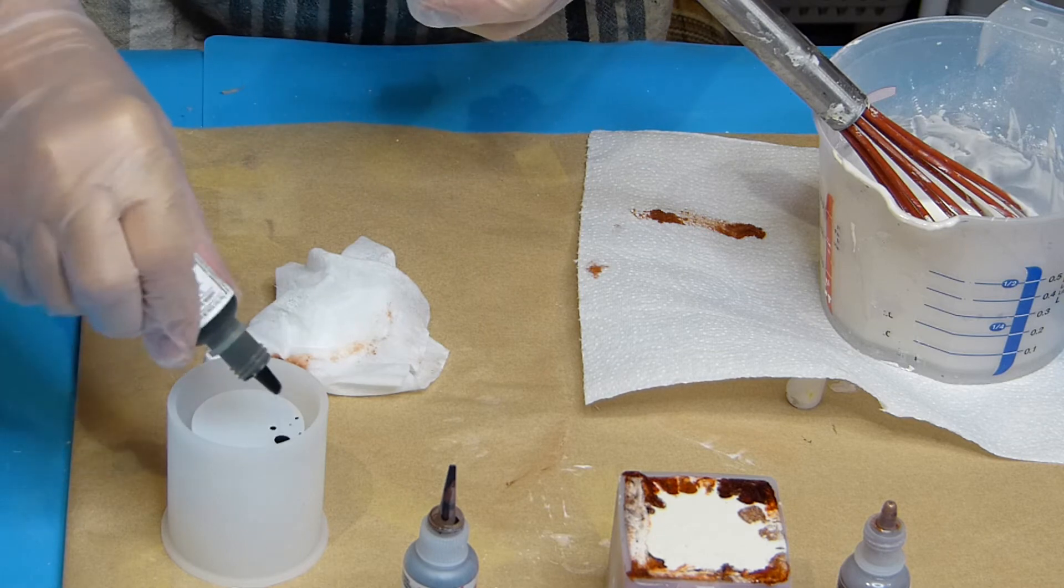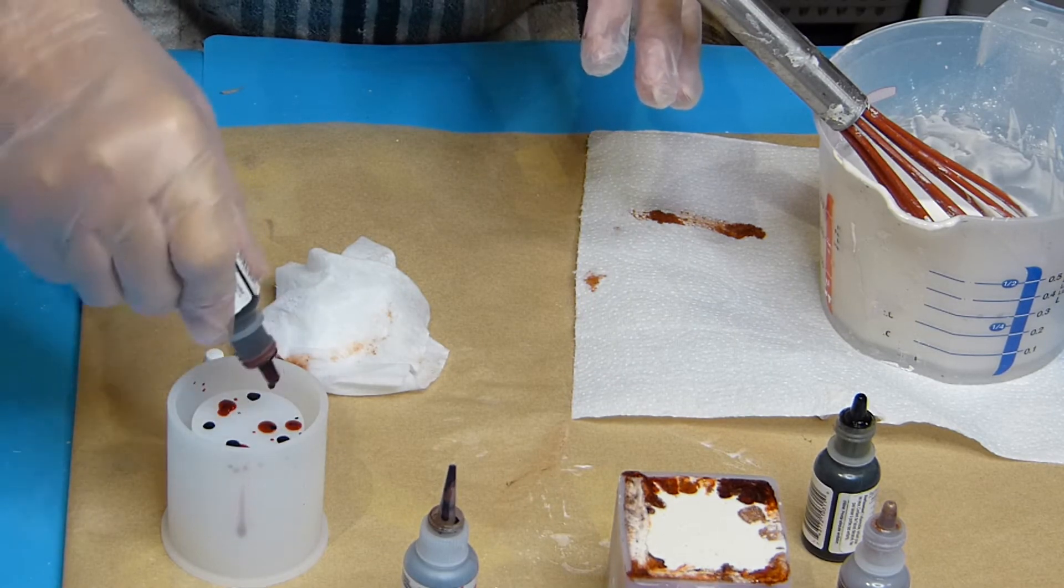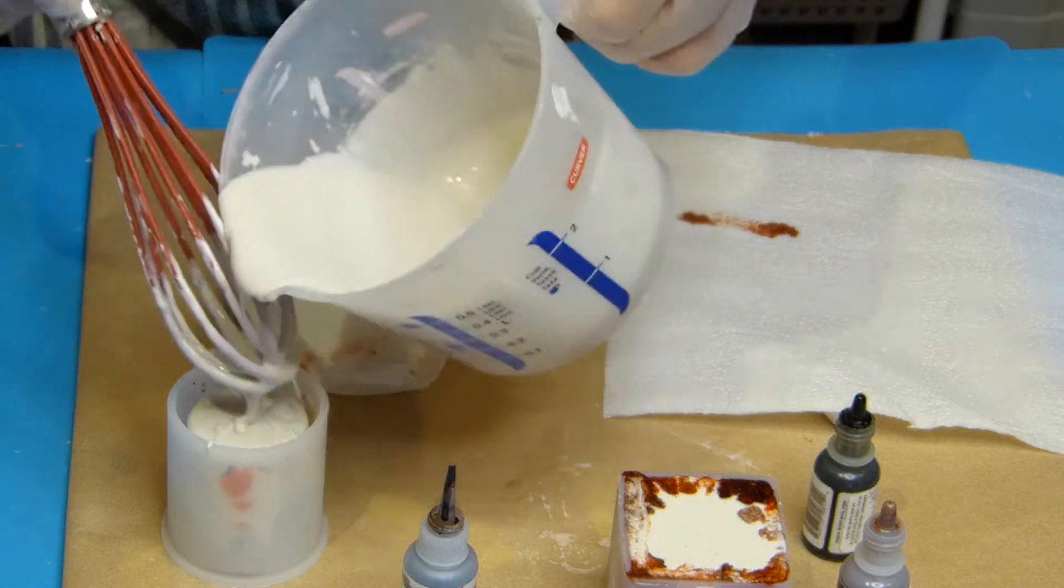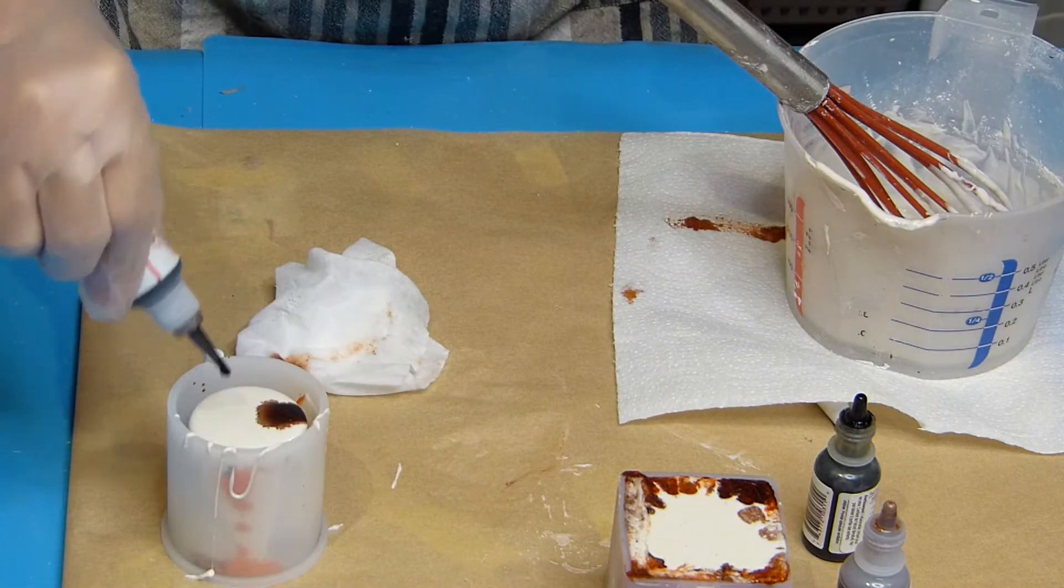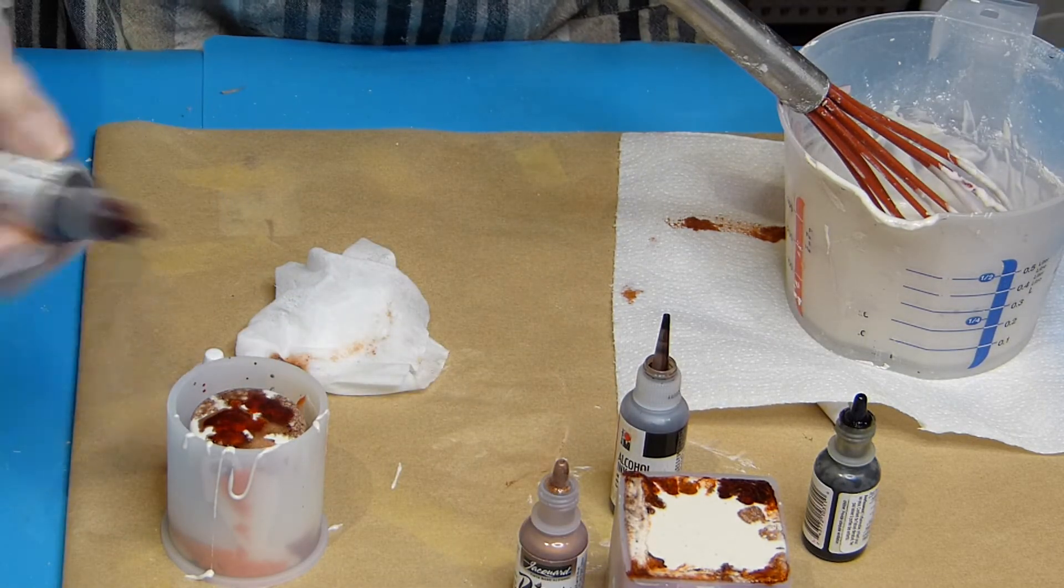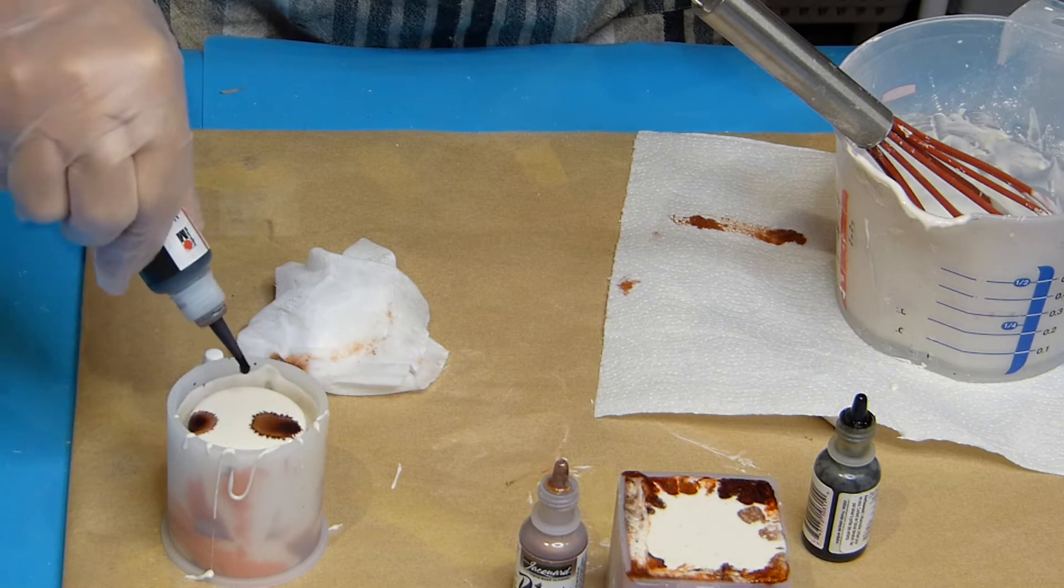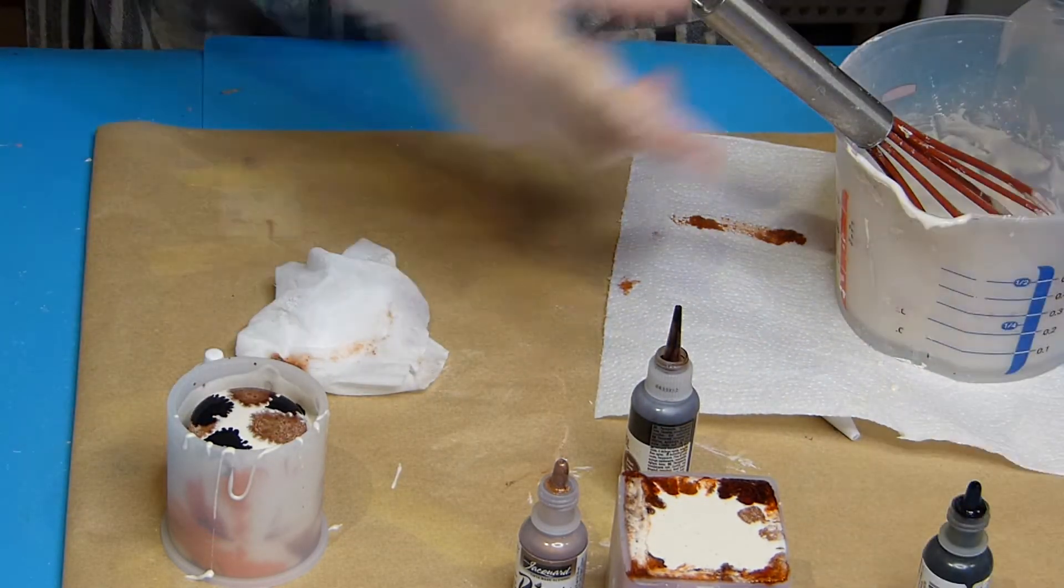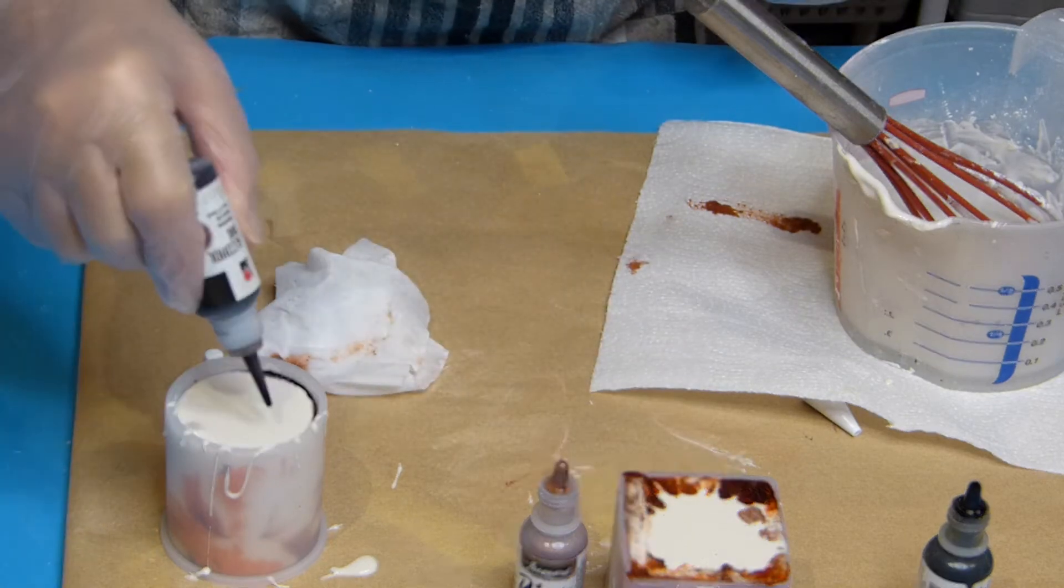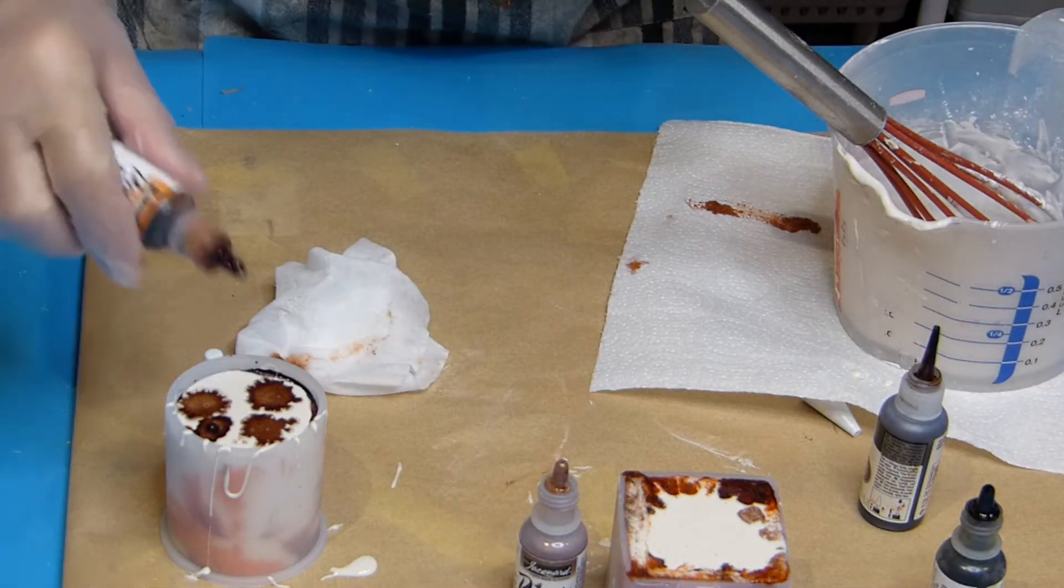Let's go for the second mold. It's of course the same method and here I use black too. I hope I don't get too many bubbles especially on the sides.